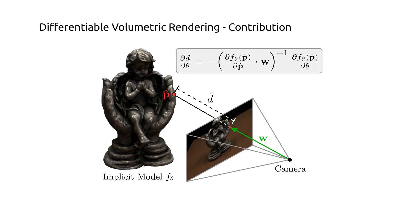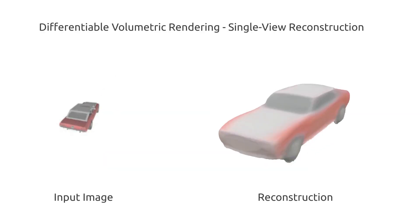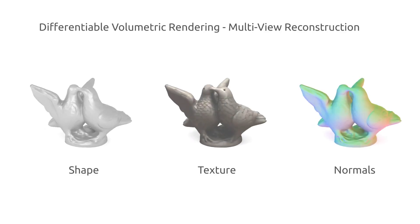Our key contribution is to analytically derive a memory-efficient solution for learning implicit representations from only posed multi-view images as supervision. We can apply our method to both single-view and multi-view reconstruction.